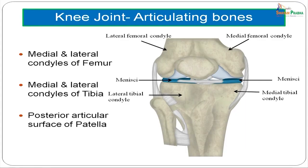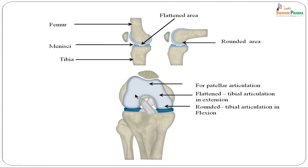The knee joint has articulating bones formed by the lower ends of the femur and the upper ends of the tibia. You see the lateral femoral condyle articulating with the lateral tibial condyle, the medial femoral condyle articulating with the medial tibial condyle, and the patella articulating with the lower end of the femur. The articular surface of the lower end of the femur: the anterior part shows a flattened area for the patella, the central part a flattened area for tibial articulation in extension, and the posterior part a rounded area for tibial articulation in flexion.